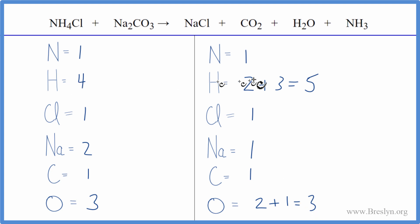I like to leave the hydrogens and the oxygens till last. That usually makes it a little easier. So why don't we start with the sodium atoms? We have two here and one here. We'll put a two in front of the NaCl. One times two, that'll give us two. That balances the sodiums.